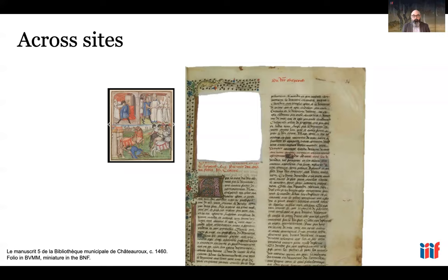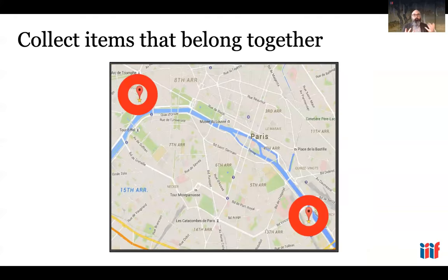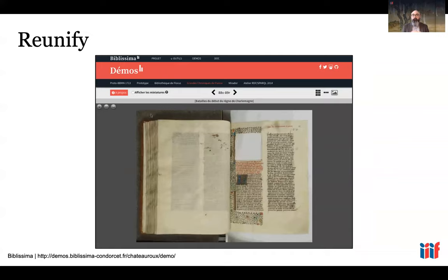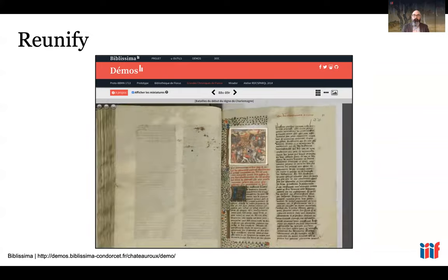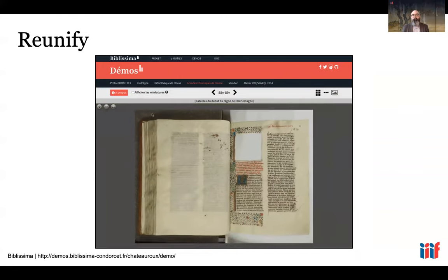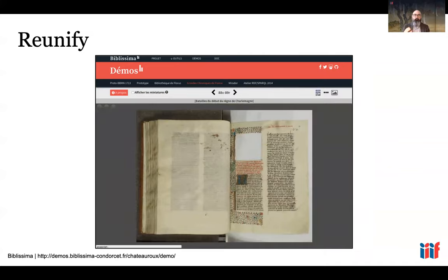The IIIF APIs are also useful across different sites and applications. This example shows an illuminated manuscript from the 15th century that had its illuminations cut out and they ended up at a different institution — both located in Paris, but in terms of digital objects, you might as well be asking end users to travel through different dimensions to reunify them. Using IIIF APIs, Biblissima was able to create a demonstration viewer that actually reconnects the illustrations with the pages from which they were cut, allowing interaction with the images as originally meant to be seen.